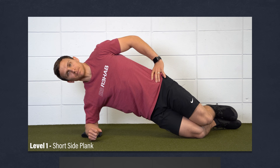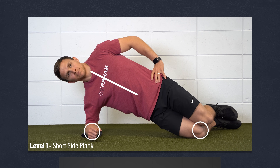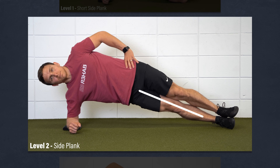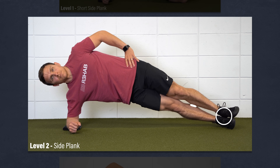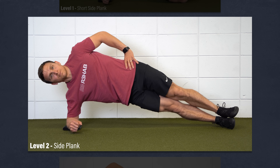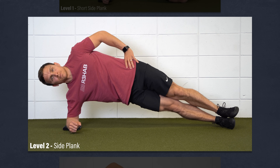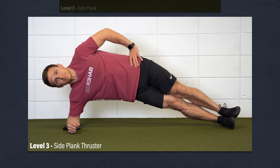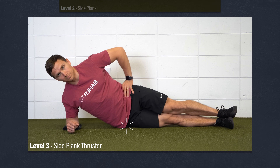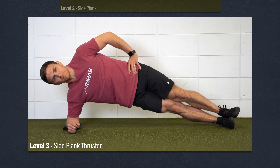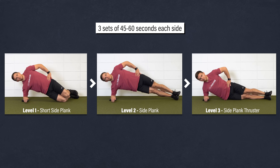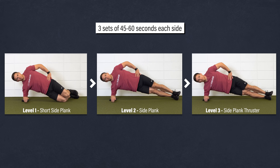Level 1 — Short Side Plank: Start on your forearms and knees while keeping your trunk in a straight line. Hold this position. Level 2 — Side Plank: Straighten your legs, stack your feet, and keep yourself in a straight line from both a front view and top view. Level 3 — Side Plank Thruster: Position yourself the same way, but slowly tap the floor with your hip before returning to the starting position and repeating. Aim for three sets of 45 to 60 seconds as you work through each exercise.